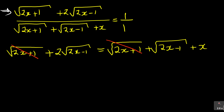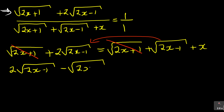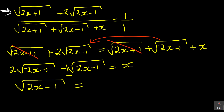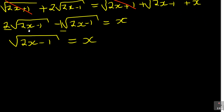The square root of (2x + 1) cancels on both sides. Take the square root of (2x - 1) terms to one side: 2·√(2x - 1) minus √(2x - 1) equals x. That gives you 1·√(2x - 1) equals x. Now square both sides to get rid of the square root: 2x - 1 equals x².